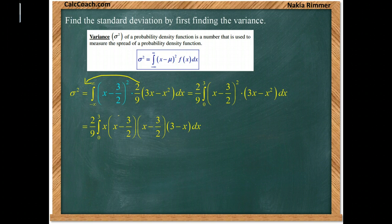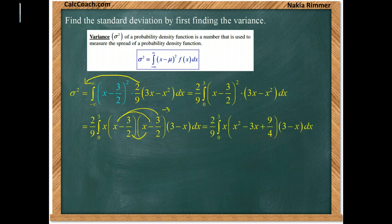We can take the 2 ninths and pull it out. Now let's go ahead and square out x minus 3 halves times x minus 3 halves. x gives us x squared minus 3 halves x and another minus 3 halves x altogether. That'll be minus 3x. And then you'll get a positive 9 fourths. This x from the second term, both of these have an x. You might find your life easier if you factor that x out. So we factor the x out and we're left with 3 minus x.